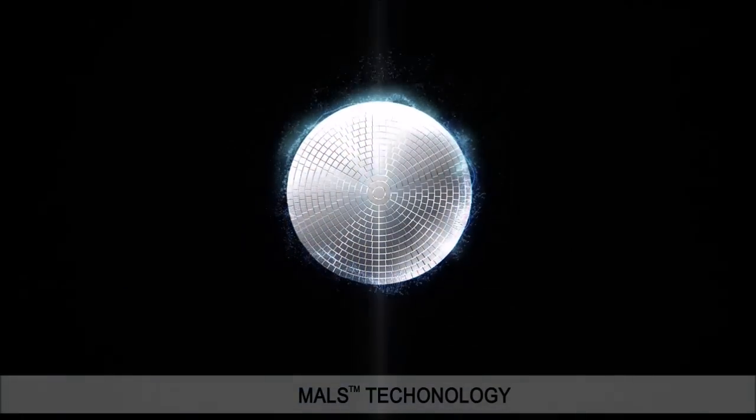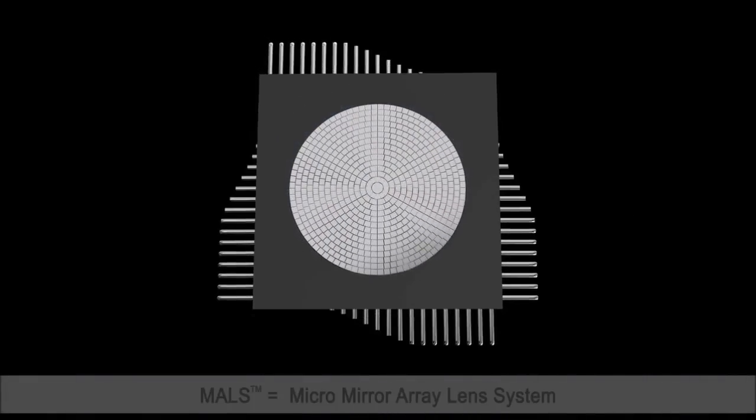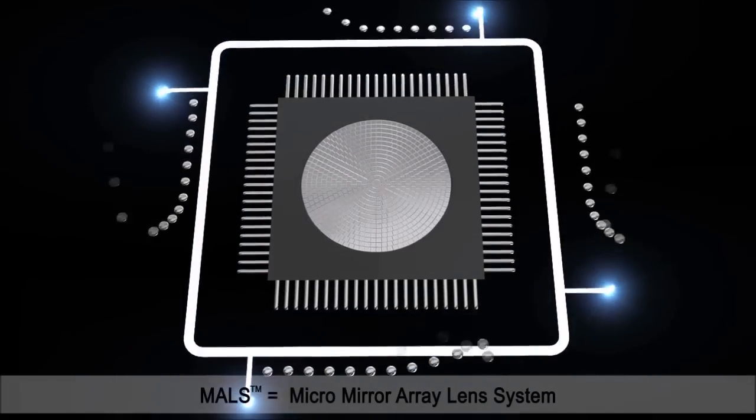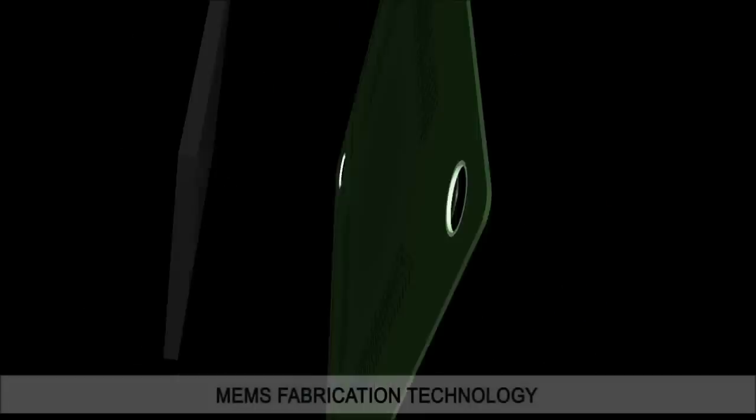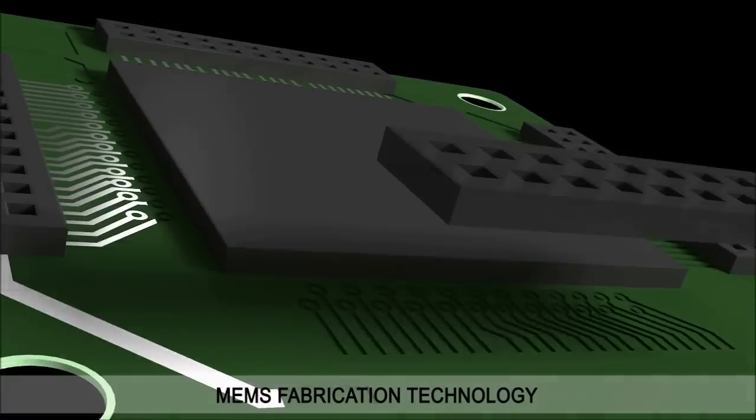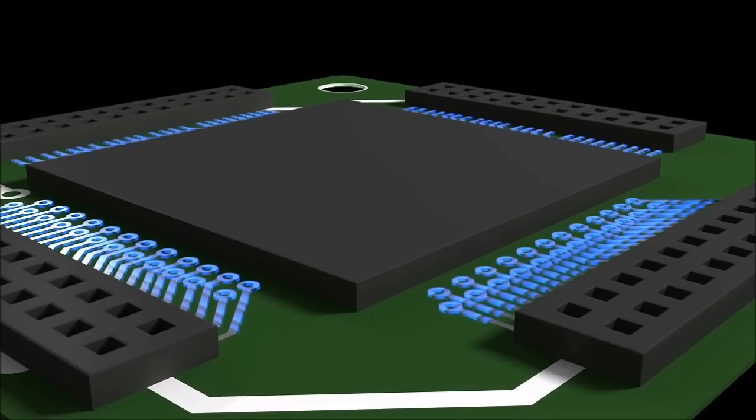The core technology of SD Optics is MALS, which stands for Micro Mirror Array Lens System. It is a reflective type lens fabricated on a semiconductor wafer. MALS is finally produced after reflective coating process.